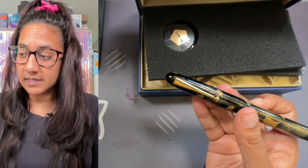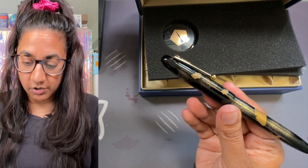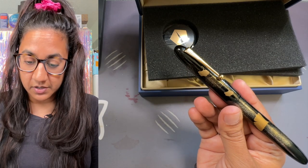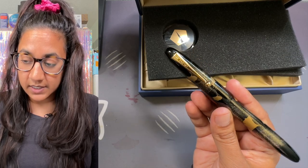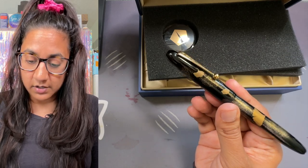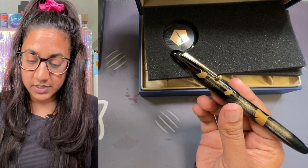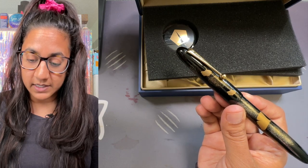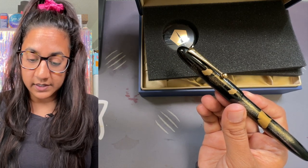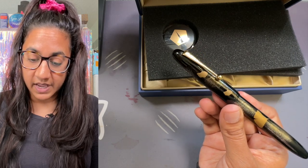The pen has gold dust sprinkled all over it and has been finished using the togidashi burnished polishing technique. Ginkgo leaves are depicted on the cap and barrel using hira flat makie techniques, and kakiwari techniques have been used on the golden leaves to clearly render their veins.